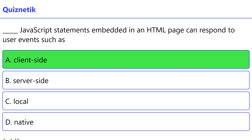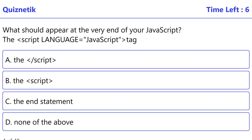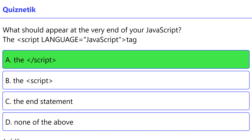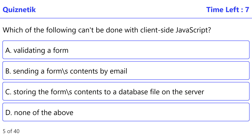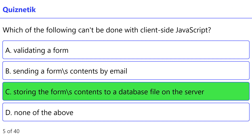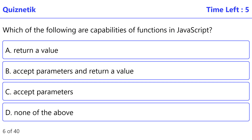Correct option is A: client-side. It should appear at the very end of your JavaScript script — language equals javascript tag. Correct option is A: the script. Which of the following cannot be done with client-side JavaScript? Correct option is C: storing the form's contents to a database file on the server.